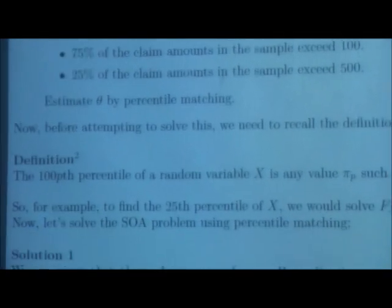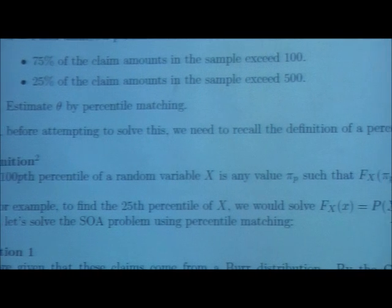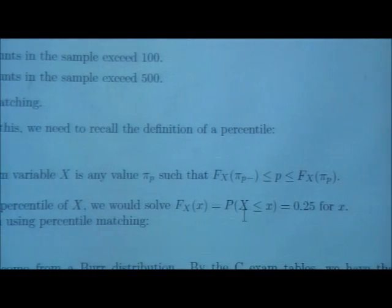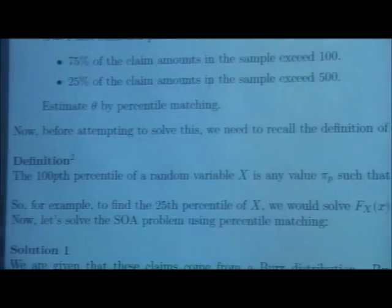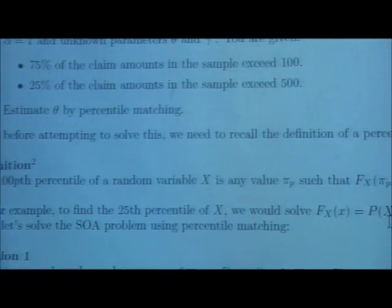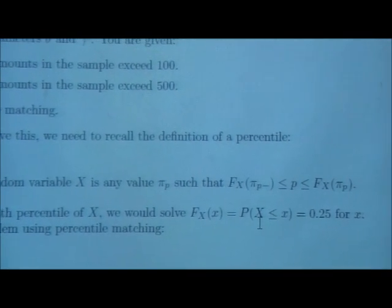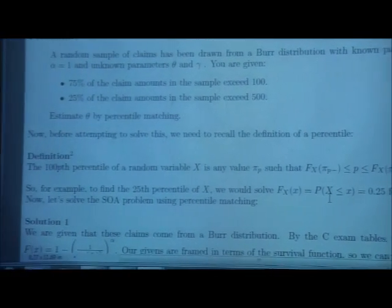So the definition here is from Klugman and his friends, and it says that the 100p-th percentile of our random variable X is any value of pi sub p such that the CDF evaluated at pi sub p approaching from the left side is less than or equal to p, which is itself less than or equal to the value of the CDF evaluated at pi sub p. Now let's discuss the solution.